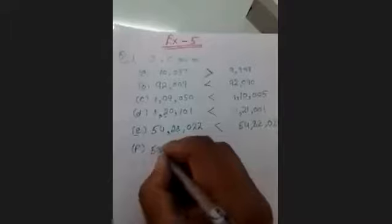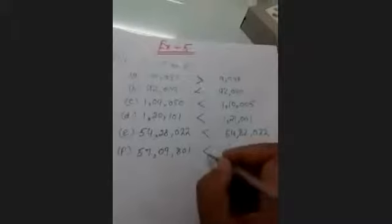The last part of Question 1: compare 57,59,801 and 59,07,801. Here we have 57,00,000 vs 59,00,000. Since 57 is less than 59, the first number is less than the second. Students, compare numbers according to their place values and put the sign: greater than, less than, or equal to.